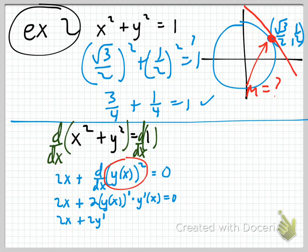We've got to be really careful: that 1 right there is y to the first power. So we get 2x plus 2y times y prime equals zero.